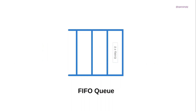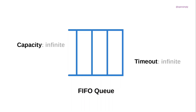In an MMC queuing system, the queue capacity — the number of waiting places — and the queue timeout — the maximum time an entity can wait in the queue — are both assumed to be infinite.